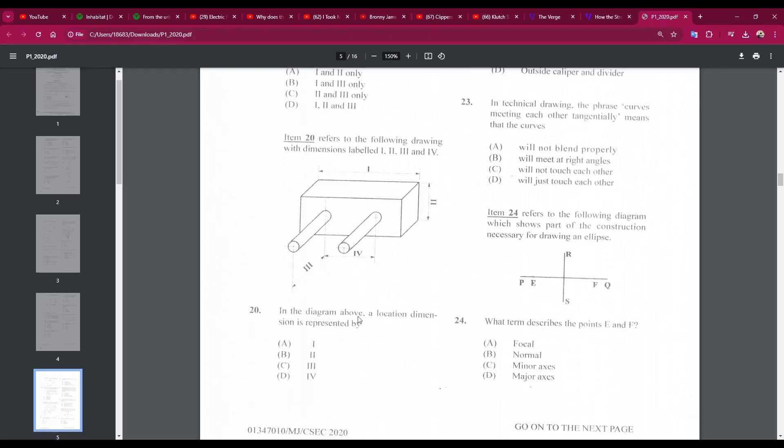Number 20: in the diagram above, a location dimension is represented by... so it's not this, this is a length, height, this is not the length. The answer is 4. It gives the locations of these cylinders, and this is a very common question. Most of the questions are pretty common, actually. Number D, 4.